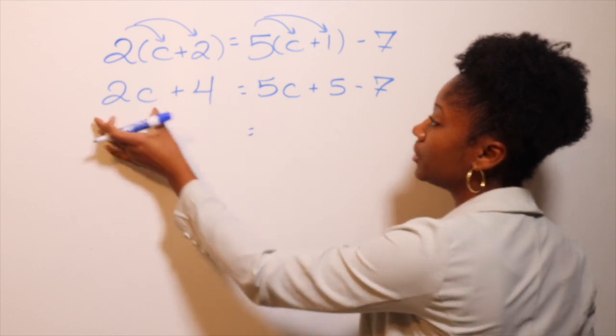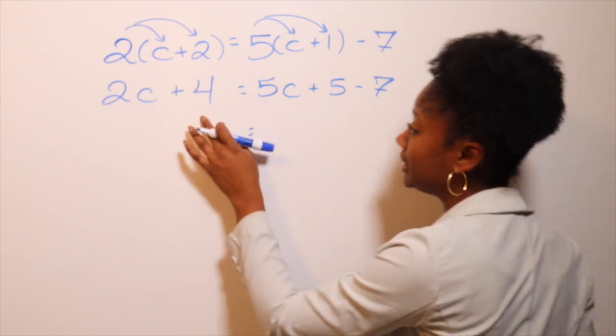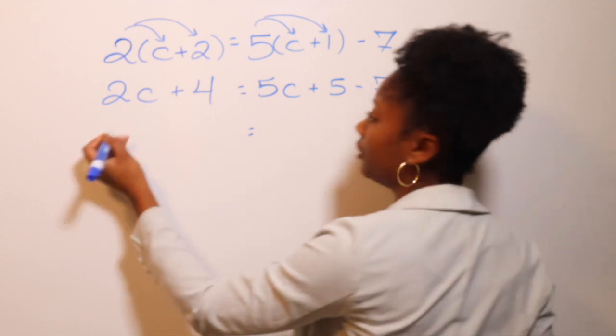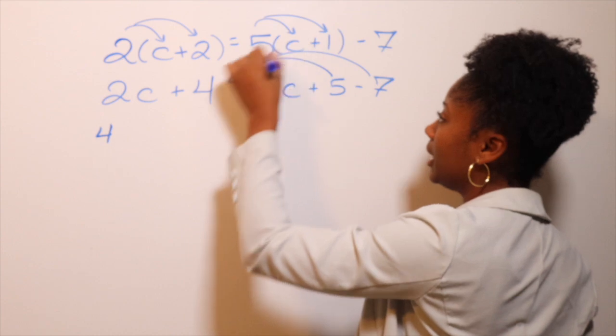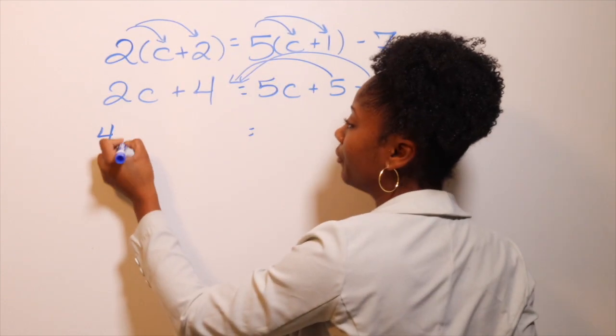So what I'm going to do is I'm going to bring the C with the next C, and the ones without a C on it, I'm going to put them all together. So I'm going to have 4. You want to make sure you bring the numbers behind each other. So you have 4.